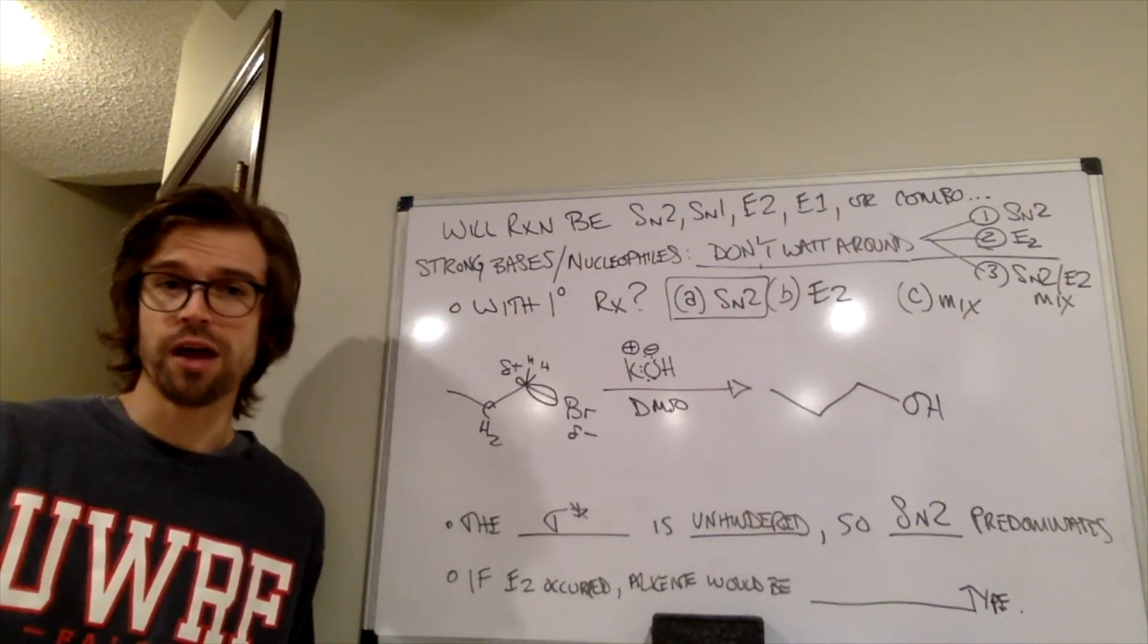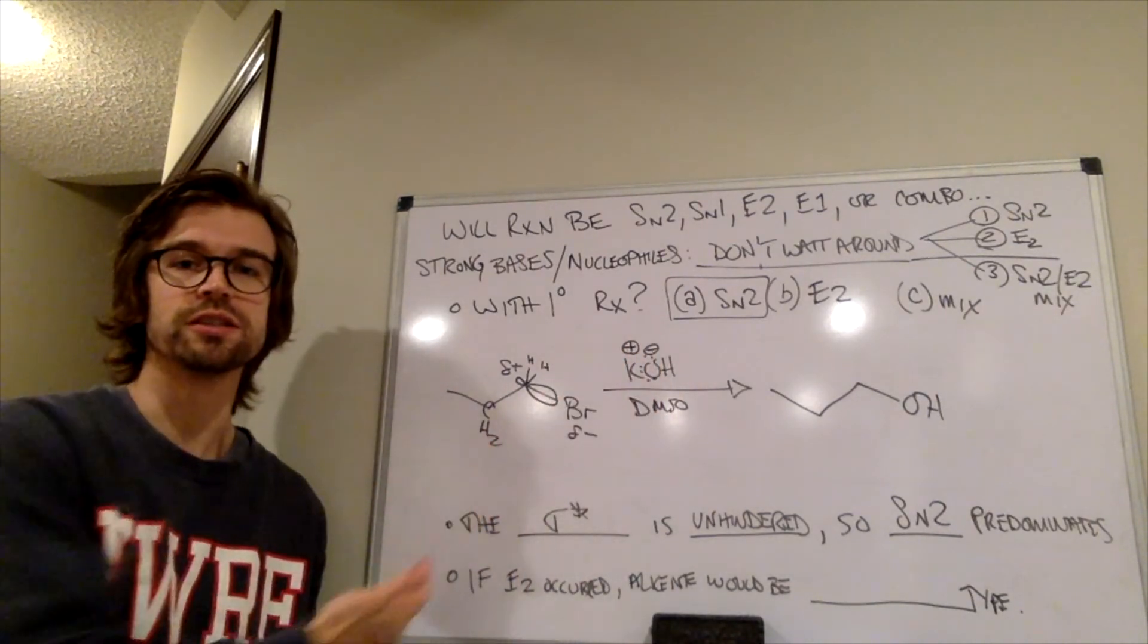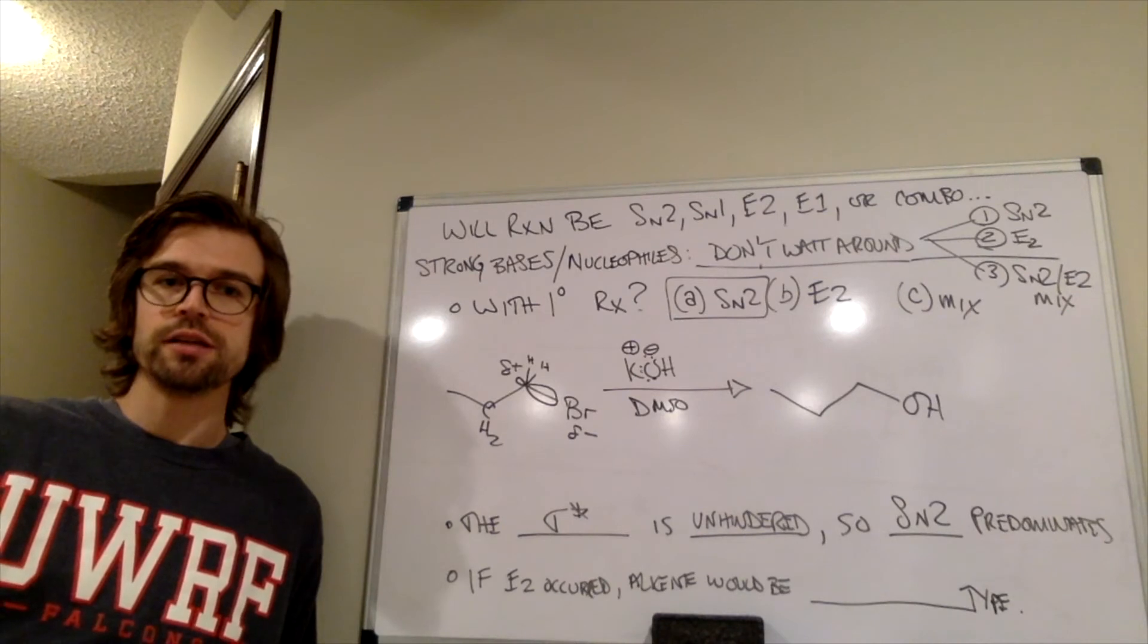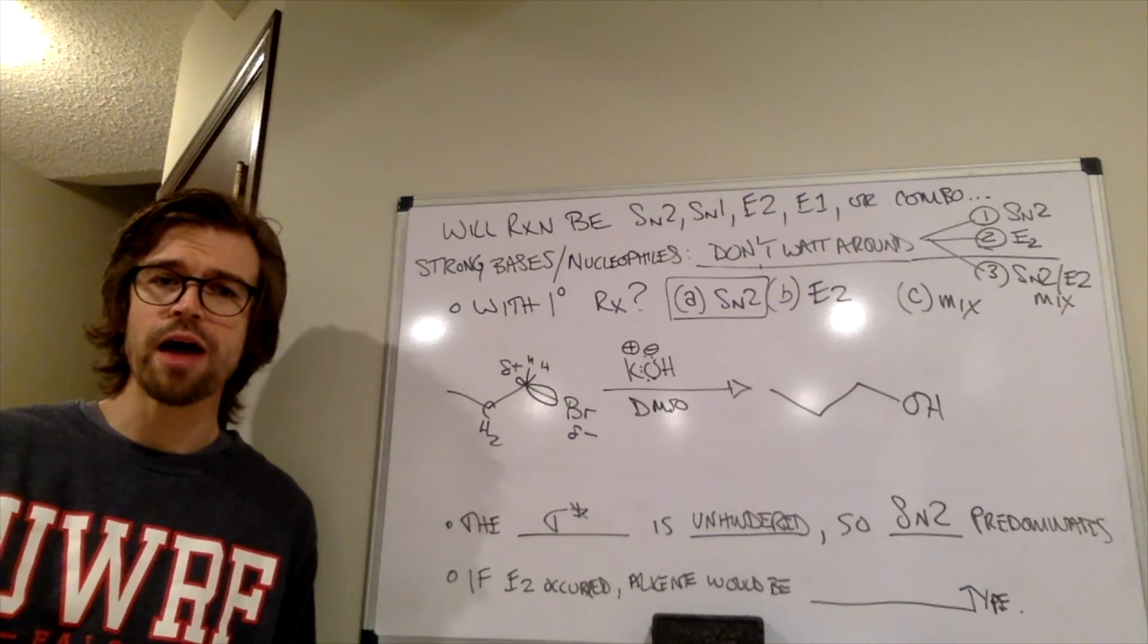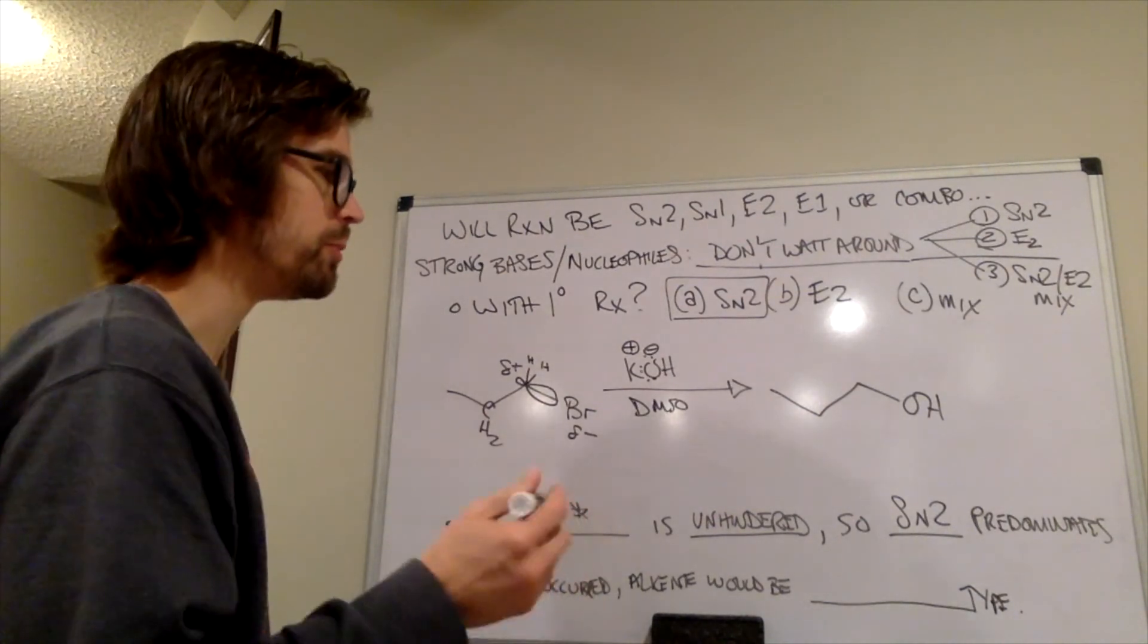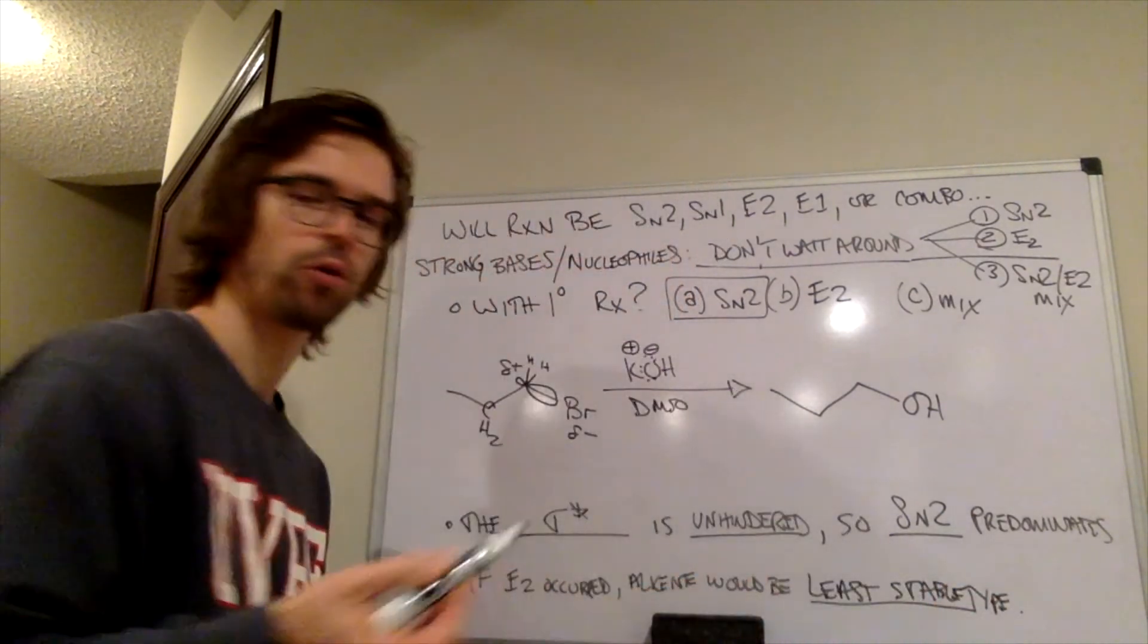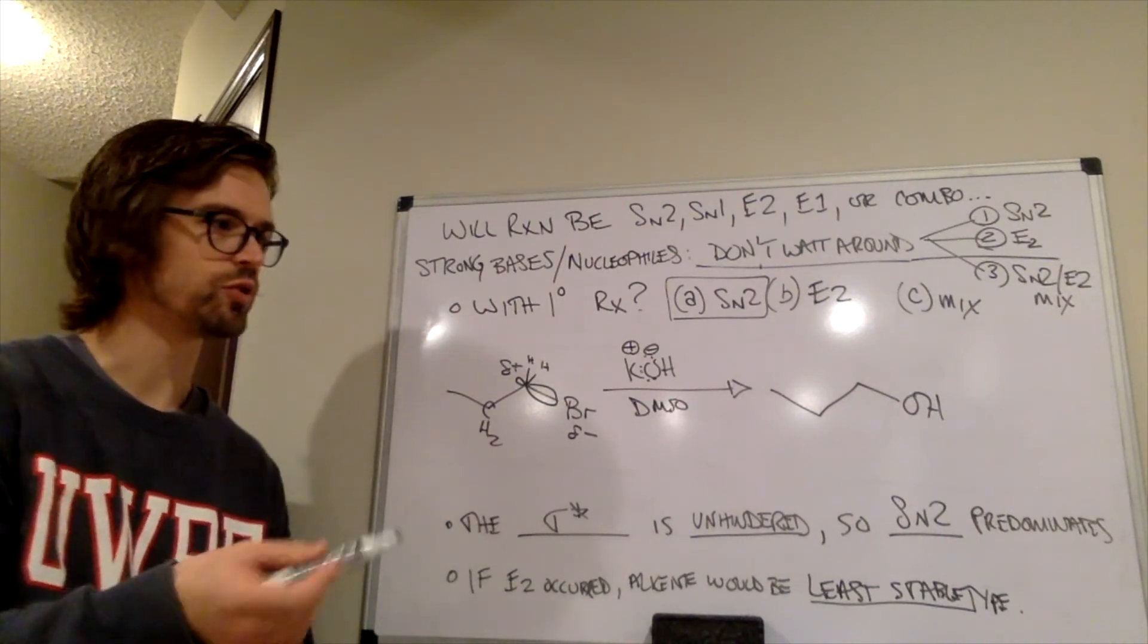Some of you might be thinking, well, yeah, well, it predominates, but it's random collisions, right, so this OH- could run into the hydrogens in that position as well, and you're absolutely right, but they have to run into that position with enough kinetic energy to make the alkene product. And what I want to point out is that if E2 did occur, the alkene would be the least stable type. What do I mean by that? Well, go ahead and draw the alkene product that would form. Pause it and draw that out.